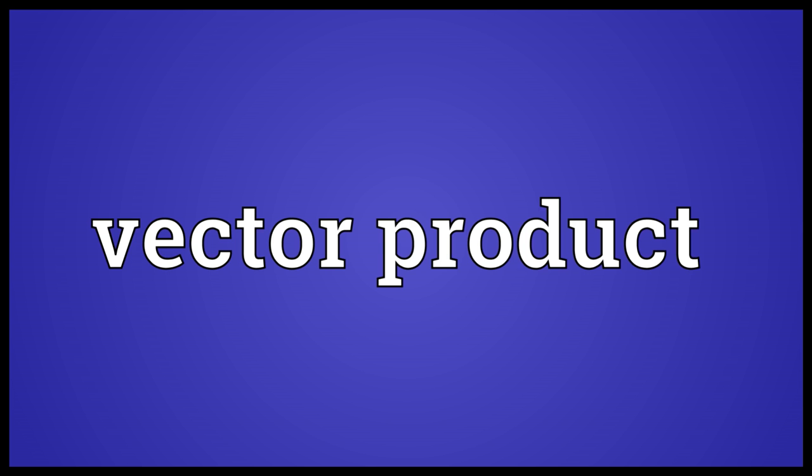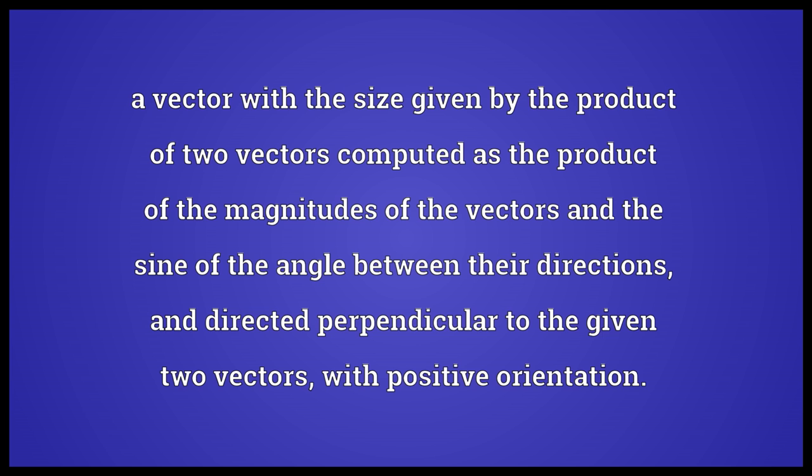VECTOR PRODUCT: A vector with the size given by the product of two vectors, computed as the product of the magnitudes of the vectors and the sine of the angle between their directions, and directed perpendicular to the given two vectors, with positive orientation.